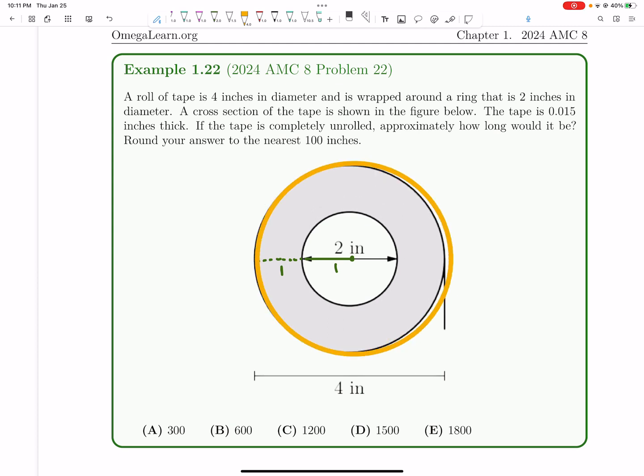Basically we're just taking like a roll of tape out, you can imagine, right? You have this tape and we just kind of remove this whole yellow circle. And this thing has a width that's 0.015 inches.